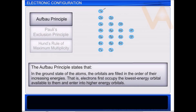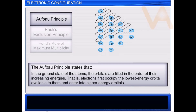First is the Aufbau principle. It states that in the ground state of the atoms, the orbitals are filled in order of their increasing energies. In other words, electrons first occupy the lowest energy orbital and then enter into successive higher energy orbitals. The electrons enter into various orbitals in an increasing order of n plus l value.